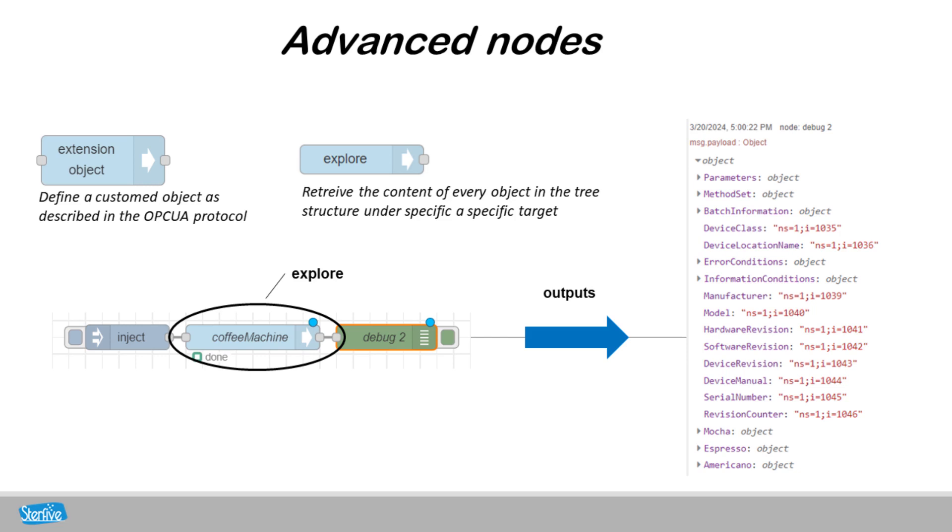On this example, we explore all the variables under the coffee machine and retrieve the node IDs for each of them.